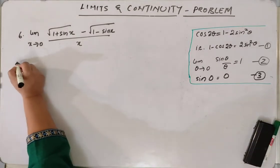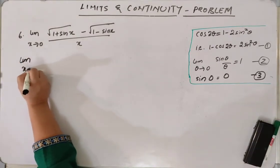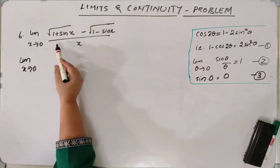Solve limits problem. Limit as x tends to 0. We can rationalize this.